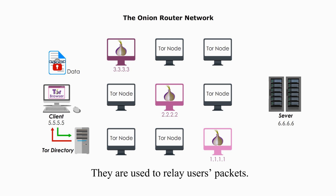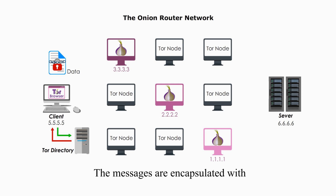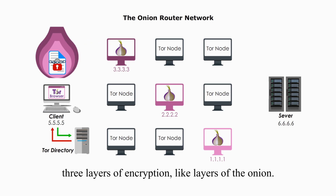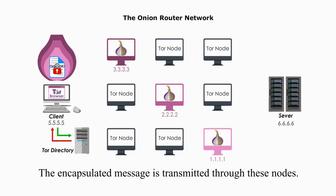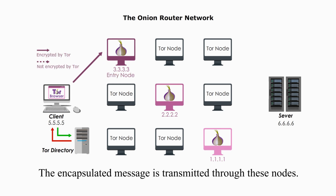They are used to relay users' packages, and they are free. The messages are encapsulated with three layers of encryption, like layers of the onion. The encapsulated message is transmitted through these nodes.